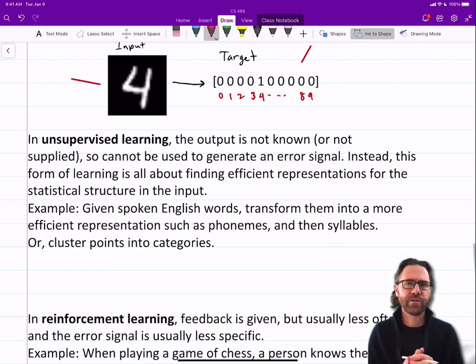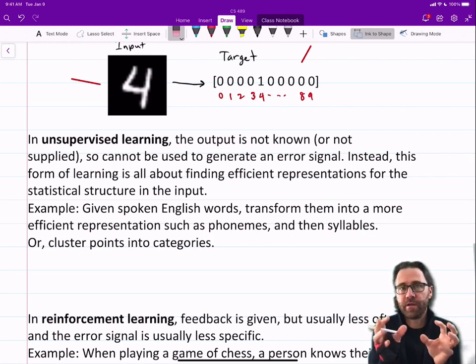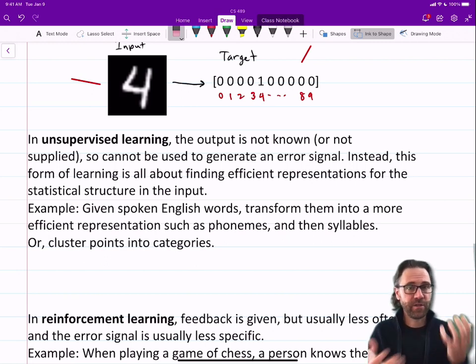So for example, given spoken English words, transform them into a more efficient representation, such as phonemes and syllables. Different languages have different sounds that they use, different frequencies of those sounds. And someone who grows up learning a particular language, their auditory system, the part of the brain that processes sound, will become efficient at parsing what they hear into little pieces that allow the brain to efficiently interpret what's being said.